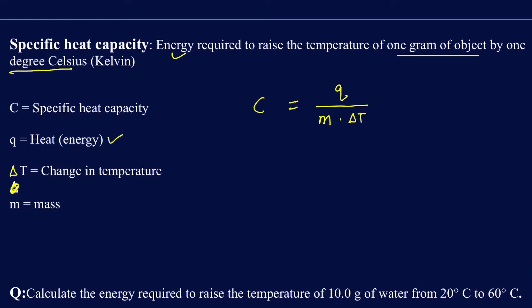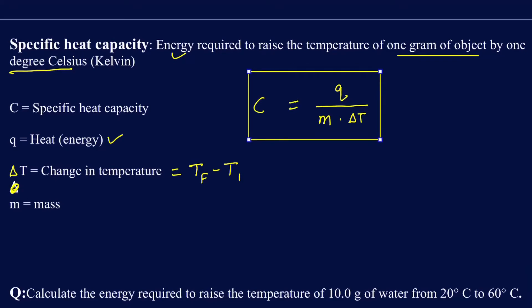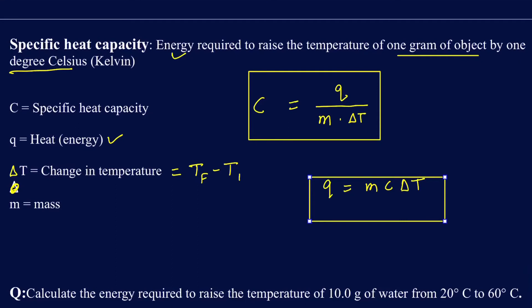C is the specific heat capacity, Q is the heat or energy, ΔT is the change in temperature — always calculated as T_final minus T_initial — and M is the mass. If I rearrange this, it becomes Q = M·C·ΔT. It's rather easier to memorize this particular form because you can just call it Q equals M-C-A-T (mcat): mass, specific heat capacity, change in temperature.